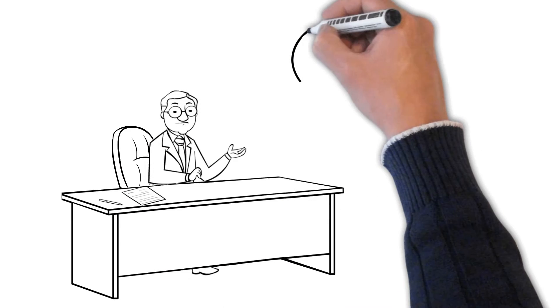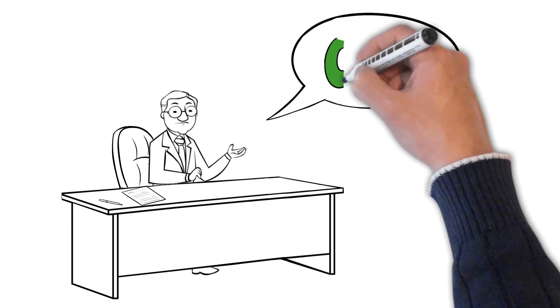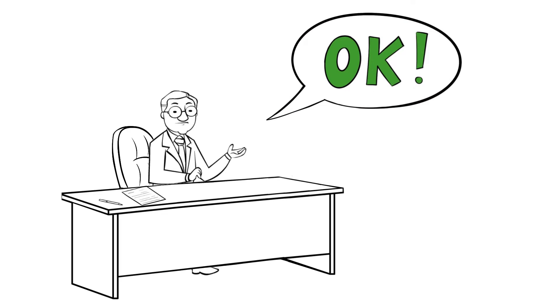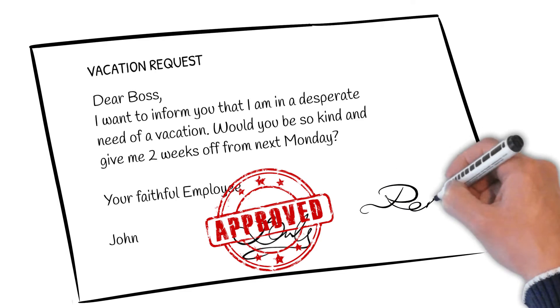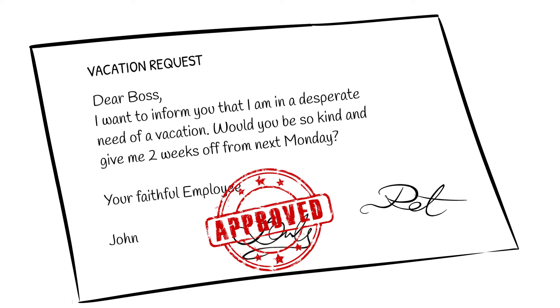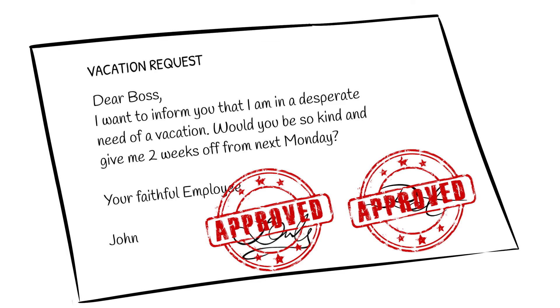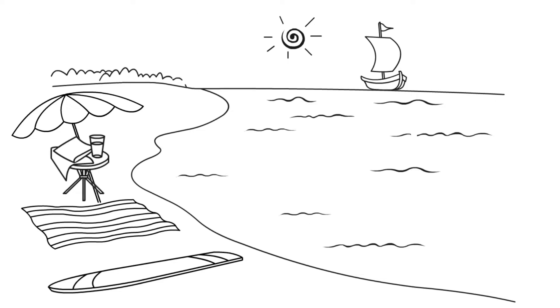If so, the HR employee accepted the leave, stamped the paper, and forwarded it to the supervisor for additional approval. If the manager approved, the request was stamped a second time and the employee could go on vacation.